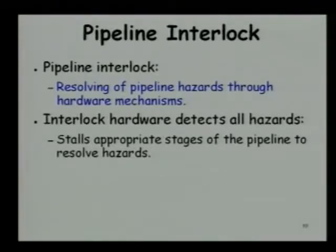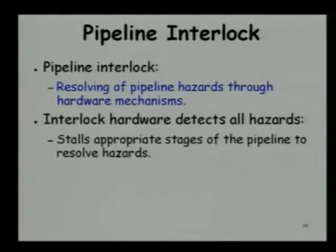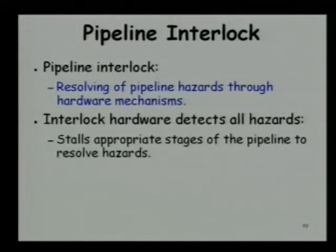A pipeline interlock is a hardware means to detect and resolve hazards, and the simple technique it adapts is to stall the pipeline. And obviously, this will be a very inefficient solution. It will prevent the pipeline from producing wrong results, but it will slow down the pipeline considerably, because the data dependencies, control dependencies, etc., are just too many in a program. You will encounter them at a very high frequency — maybe 2 or 3 per instruction — and if there are also structural hazards, stalling will degrade pipeline performance enormously.